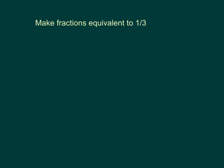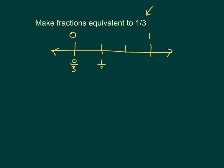Here we're asked to make fractions equivalent to 1 third, so we'll start with a number line. We know that 1 third is less than 1, so we'll use 0 and 1 as our whole numbers. The denominator tells us we're dividing into three parts between those whole numbers, so in between 0 and 1 we have three equal parts. Labeling our number line: 0 equals 0 thirds, here is 1 third, here is 2 thirds, and here is 3 thirds, which also equals 1.